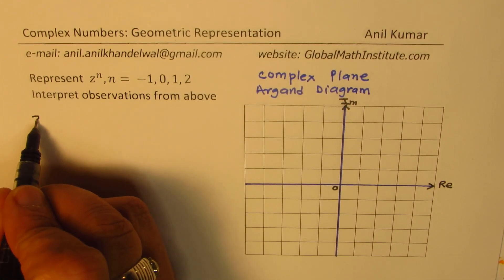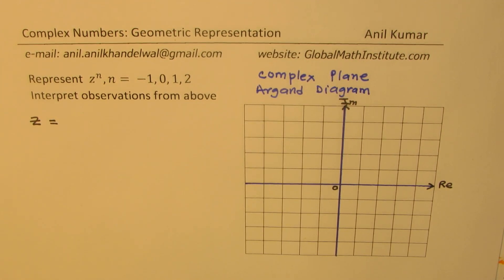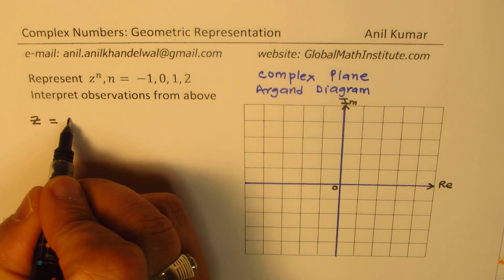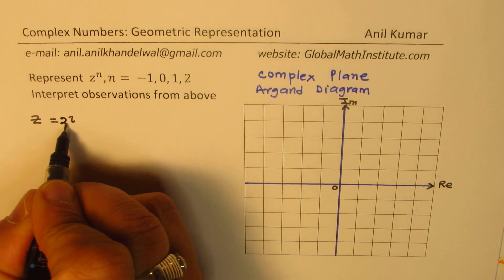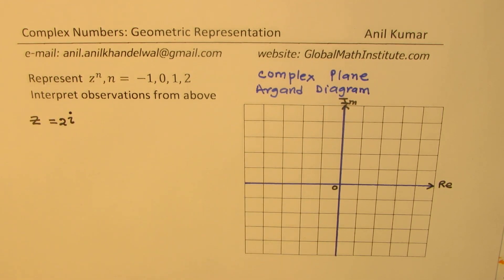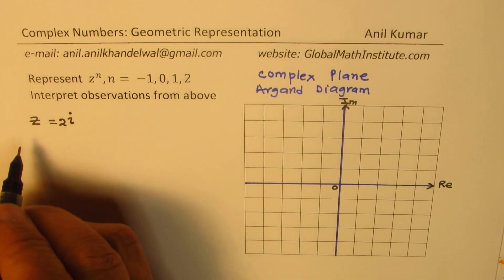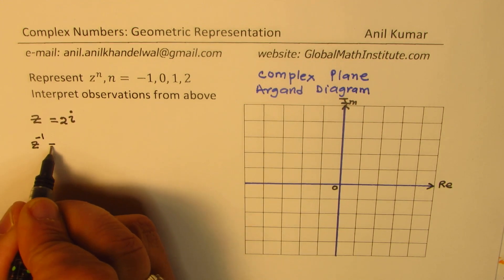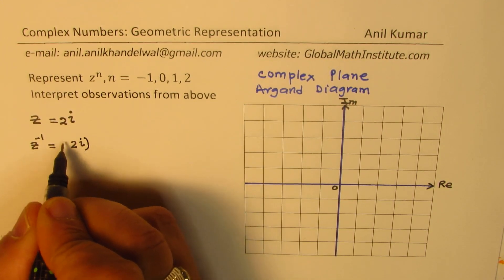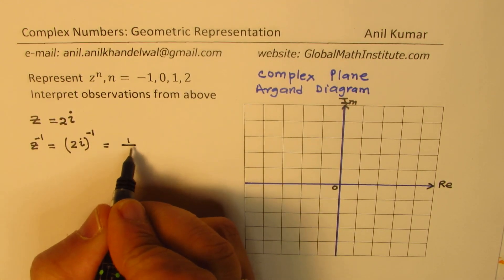We'll take an example. Let's take a pure imaginary number first, and then look into its powers. Let's say z equals 2i. So we're taking a pure imaginary number z equals 2i. Then we'll see how to represent these powers. So z to the power of minus 1 basically means 2i to the power of minus 1, and that is 1 over 2i.